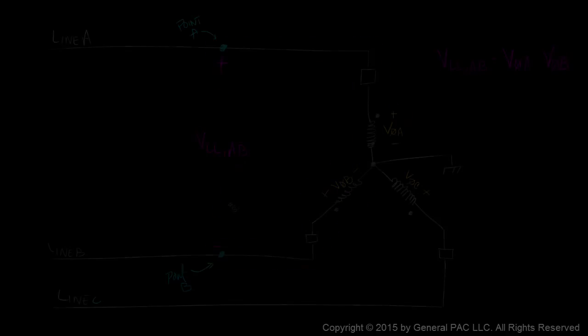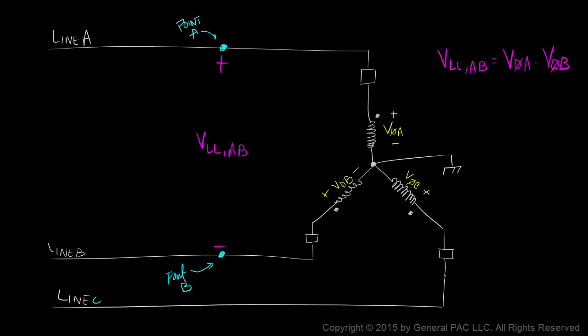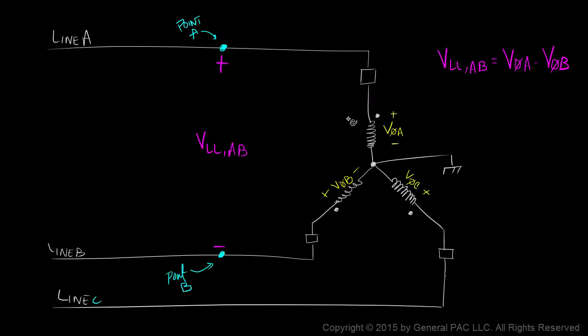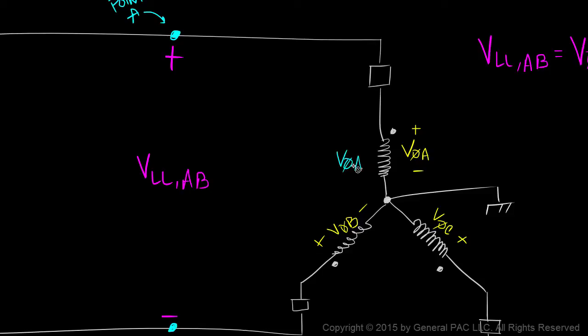Let's look closely at this equation from a different perspective. We'll label the points of measurement for the line-to-line voltage as point A and point B. Relatively speaking, we can expect the voltage on point A and the voltage on the bushing of winding A to be the same. So what about the voltage on the polarity side of winding A? It's pretty much the same voltage since it's the same point on the line. Now, if we measure the voltage from the polarity side of winding A to the non-polarity side of winding A, we'll get phase A voltage.